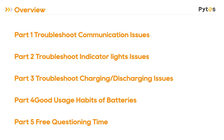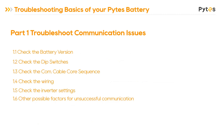Before we dive into our discussion, I want to give you an overview of what we will cover today. First, we're going to discuss the communication issues with the inverter, followed by the battery indicator light issues. The third part — which I think is what you are most concerned about — is the charging and discharging problem during daily use. After that, some tips for extending battery service life will be given in part 4. And the last part is the free question session.